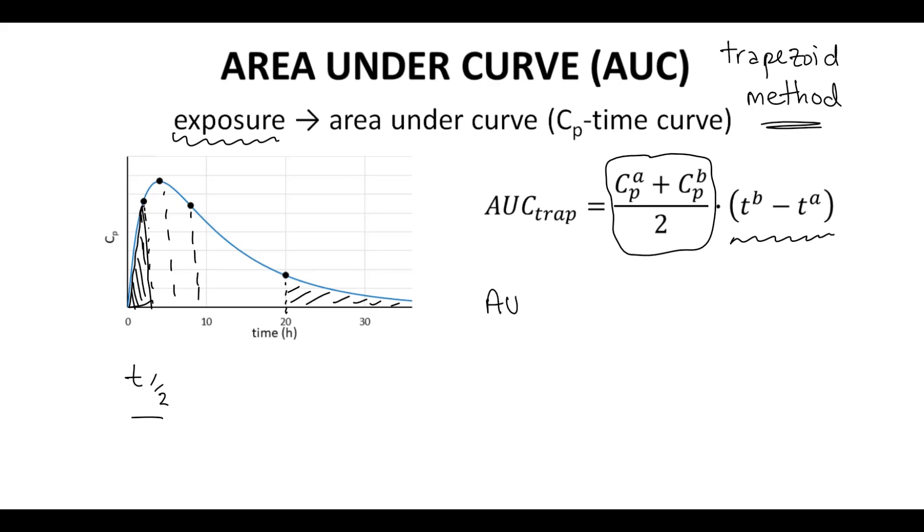then AUC for the last region is equal to the last plasma concentration data point times the half-life divided by 0.693. The sum of these different areas is the total AUC, the total exposure for the dose.